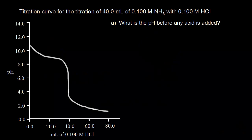Let's look at the titration curve for the titration of a weak base with a strong acid. We're starting with 40 milliliters of a 0.1 molar solution of ammonia, and we're going to add a strong acid — HCl. In part A, they want us to find the pH before we've added any acid.